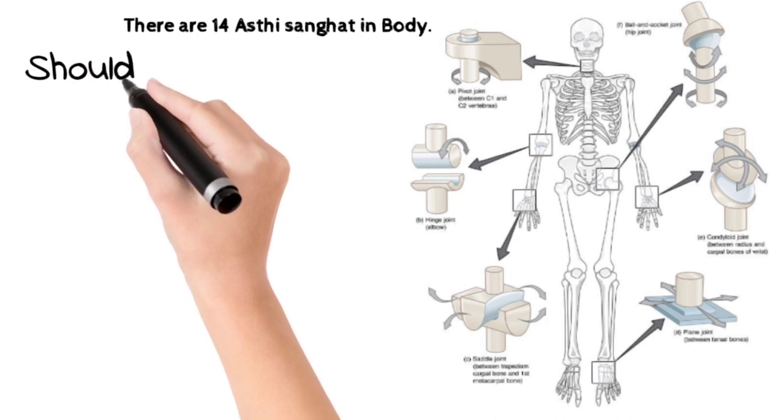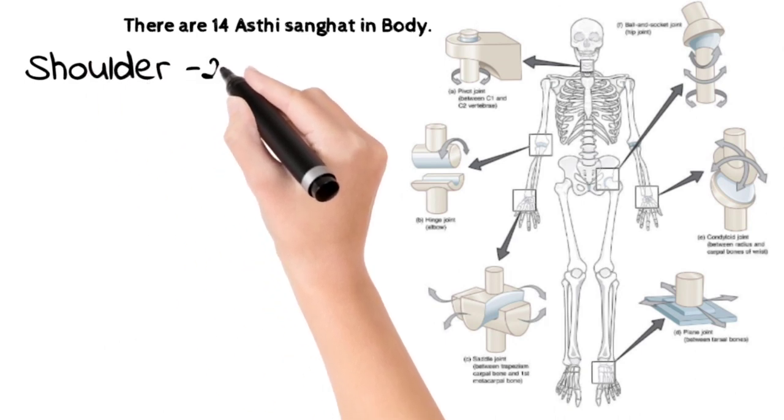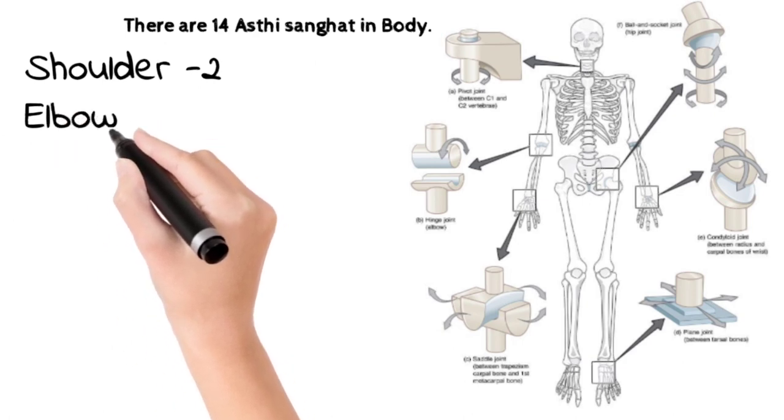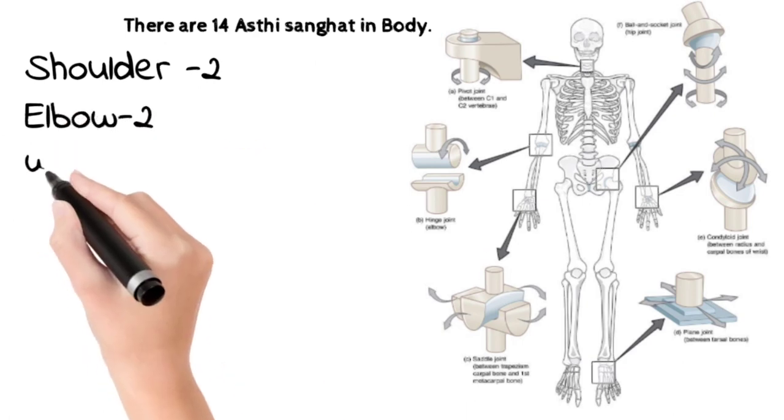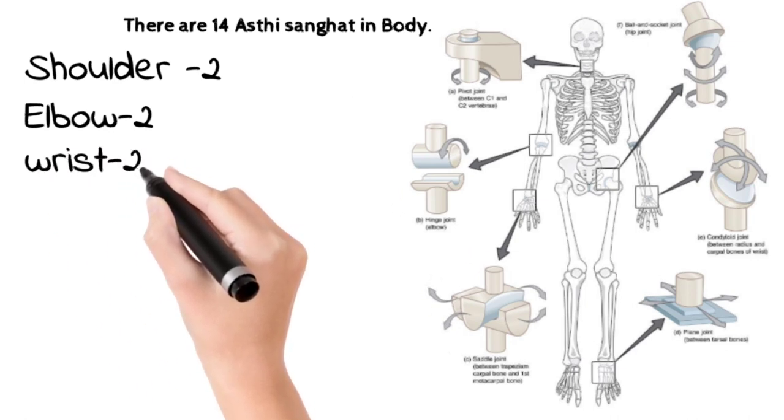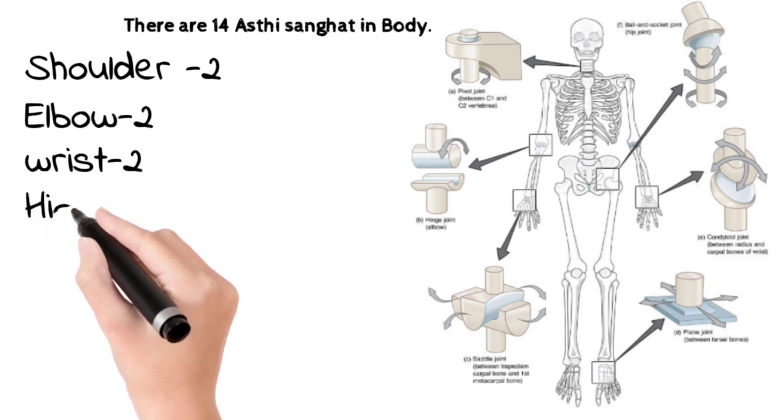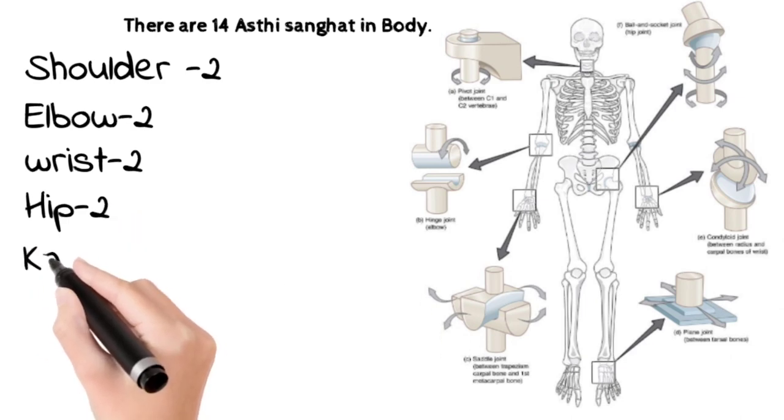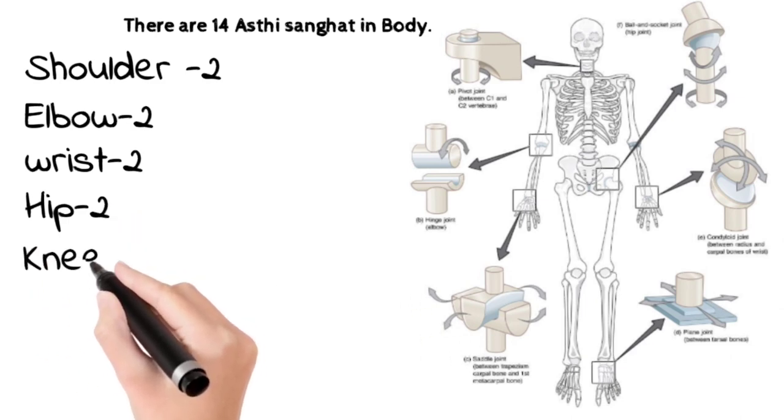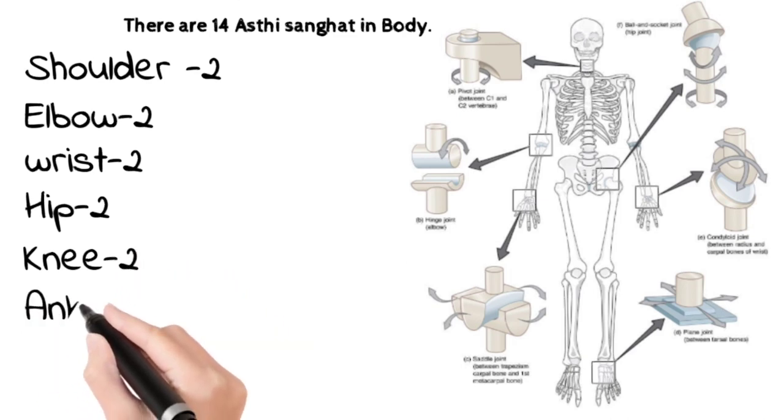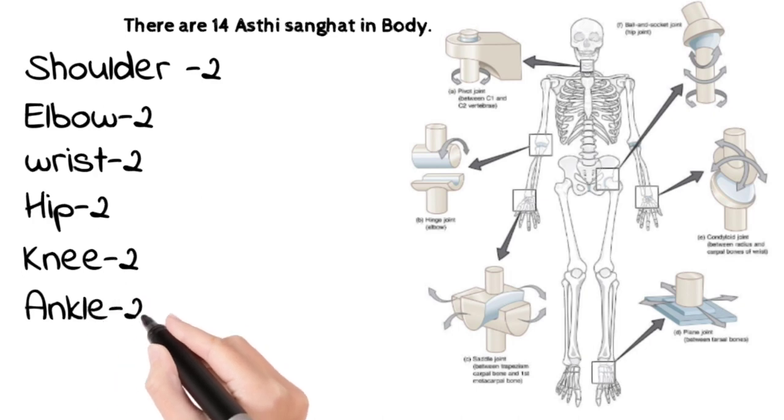Shoulder two, they are made up of three bones. Elbow, elbow pe two hote hain jo ki three bones se bante hain. Wrist do, wrist ye bhi 10 bones se banti hain. Hip pe bhi 2 hote hain, char bones se bante hain ye. Knee jo hai do knee hote hain char bones se bante hain. Ankle, ankle bhi 2 hoti hai, nine bones se banti hai. Head mein ek Asthi Sangat hote hain jo ki 15 bones se banta hai. Sacral region mein ek Asthi Sangat hote hain jo ki 5 bones se milke banta hai.